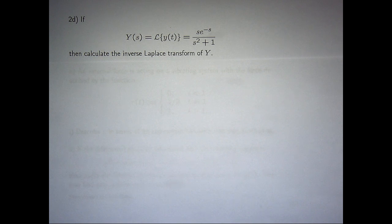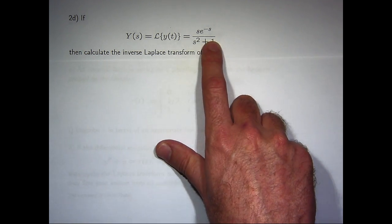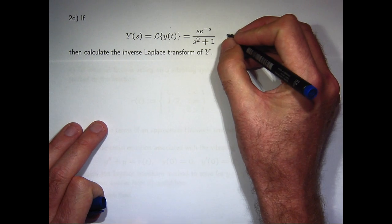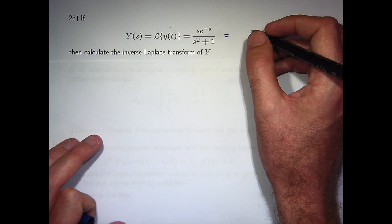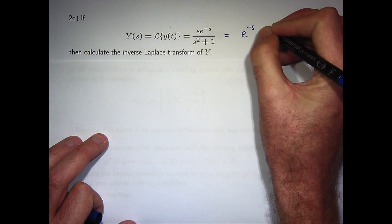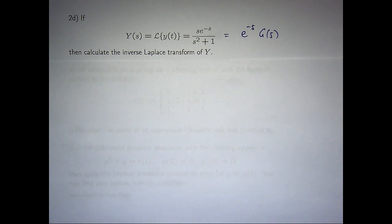So the first challenge is to calculate the inverse transform of this particular function. Now if we look at the form of this function, you can write it as the following if you like. It's an exponential function times another function of s. In this case big G of s would be s on s squared plus 1.